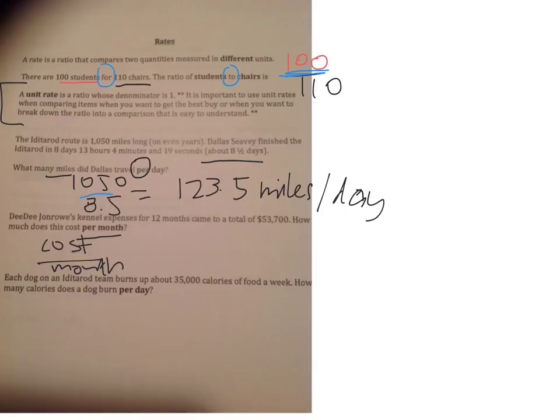So we're looking at cost per month. So we have $53,700. And what will we be dividing it by? 12 months because that's the whole year. And that comes out to $4,475 per month.